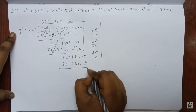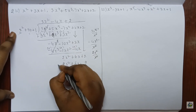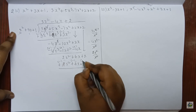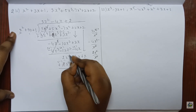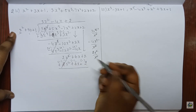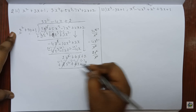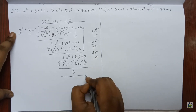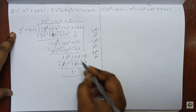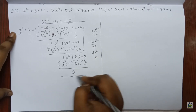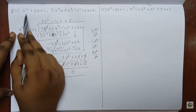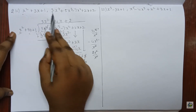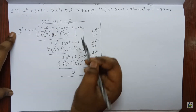Now we change the sign: plus becomes minus, minus, minus. These both get cancelled. These both get cancelled and these both get cancelled and we get 0 as the remainder. When we get 0 as the remainder, we know that the first polynomial is a factor of the second polynomial.